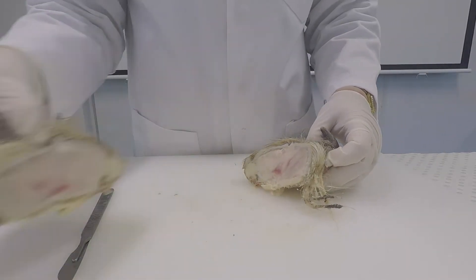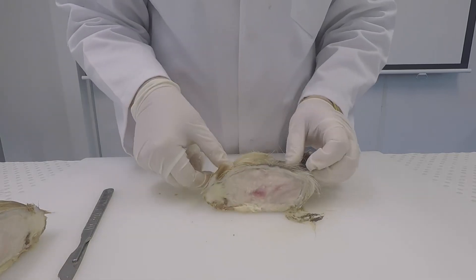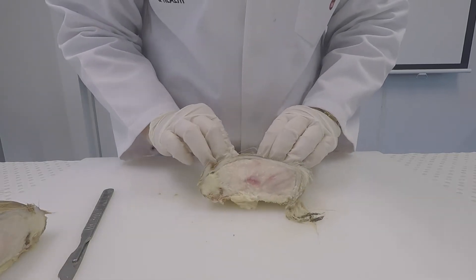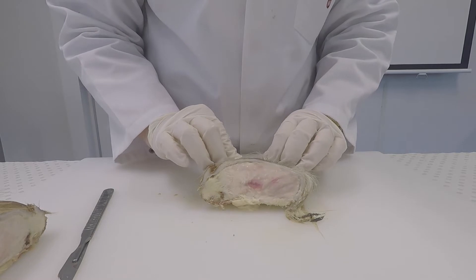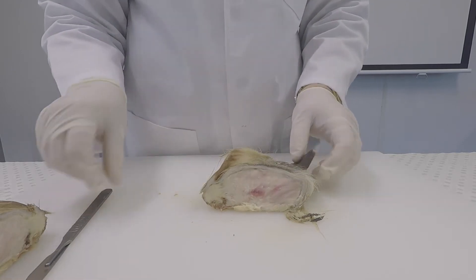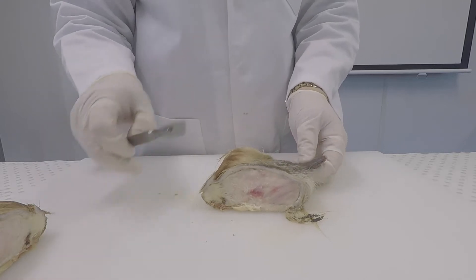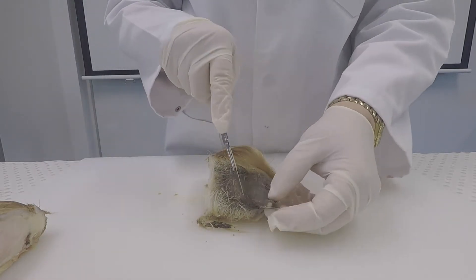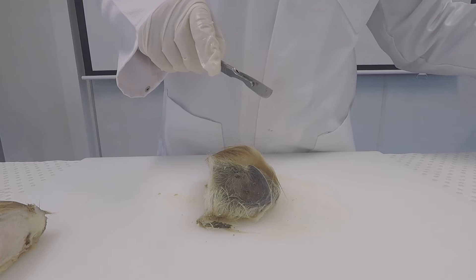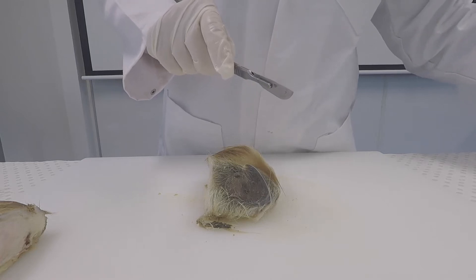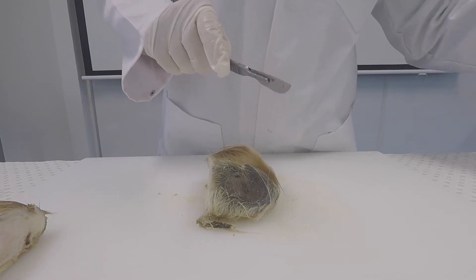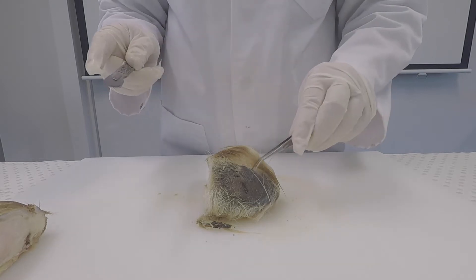And now we're going to dissect part of the mammary gland itself. We'll be able to see the ducts inside where the myoepithelial and epithelial cells are that produce the milk. You'll also note there will be a large amount of adipose tissue and other stromal tissue.